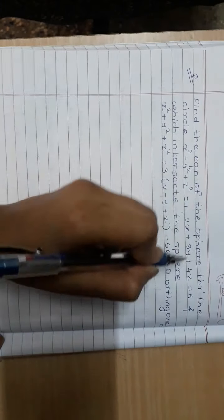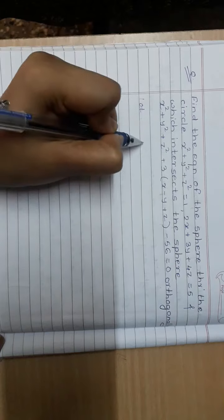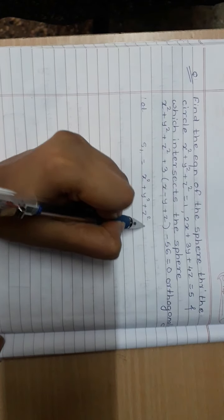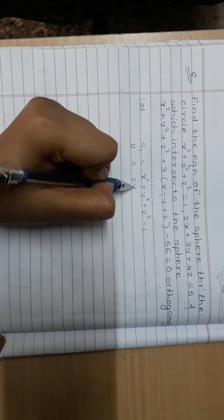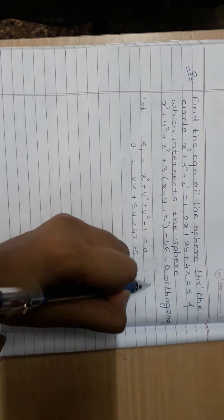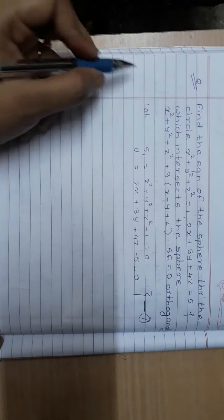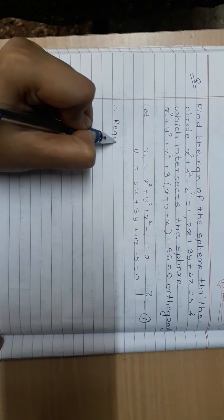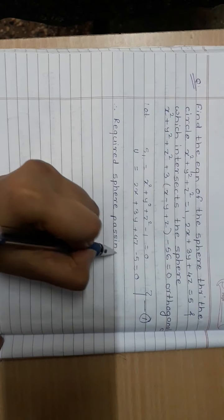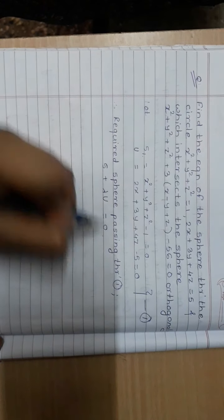Now, suppose we want to find the sphere which passes through this circle. Let's take S1 equal to x² + y² + z² - 1, and U equal to 2x + 3y + 4z - 5 = 0. Say this is equation number 1, and this is the circle through which the required sphere is going to pass. Therefore, the required sphere passing through circle 1 can be considered as S + λU = 0.